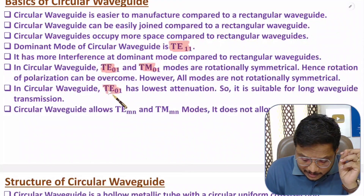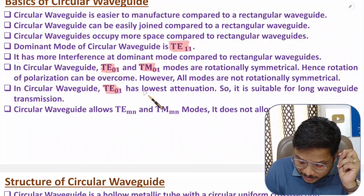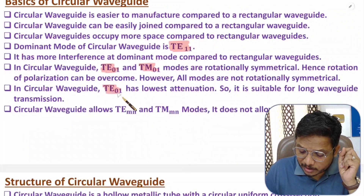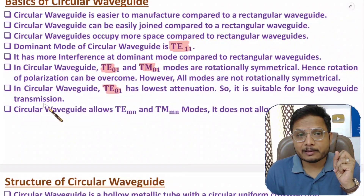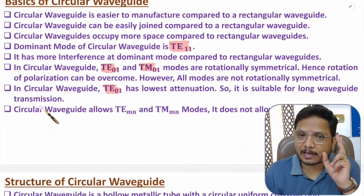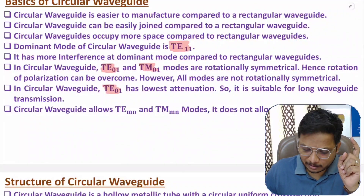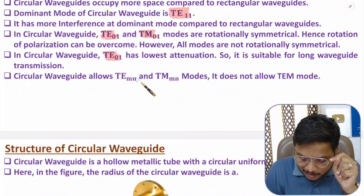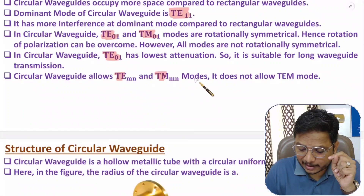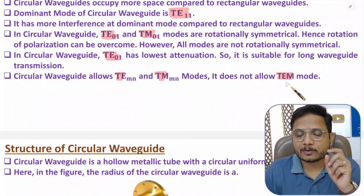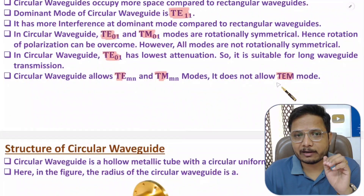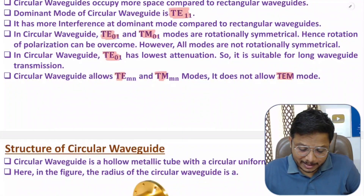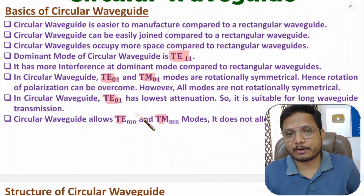When using TE01 mode, you will have the lowest attenuation, making it suitable for long waveguide transmission. Similar to rectangular waveguide, circular waveguide also allows only TE and TM modes — it does not allow TEM mode. These are very essential points to know regarding circular waveguide.